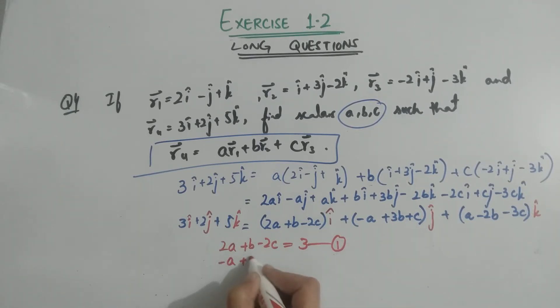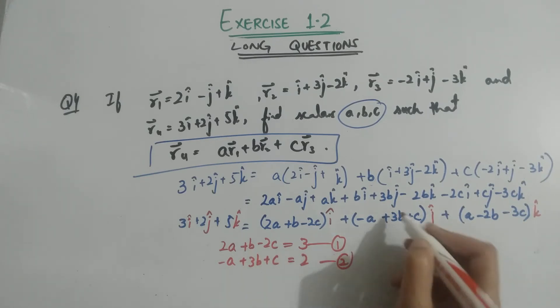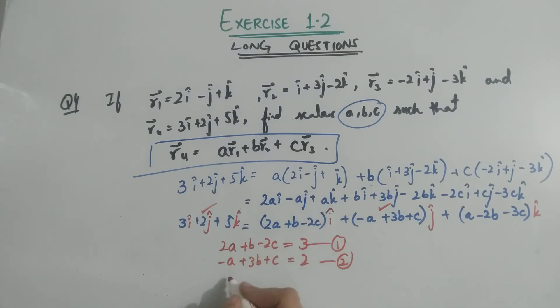Similarly, minus A plus 3B plus C equals 2. This is the coefficient of j here and the coefficient of j there. And the coefficient of k: we will equate A minus 2B minus 3C equals 5. This is equation three. Now we will solve these equations simultaneously to find the values of A, B, and C.